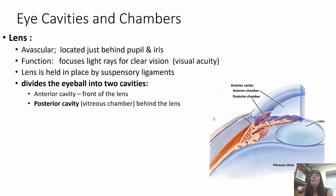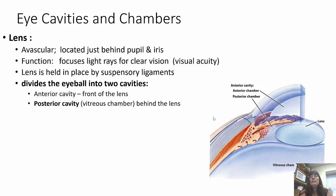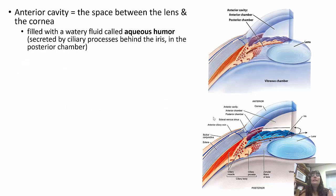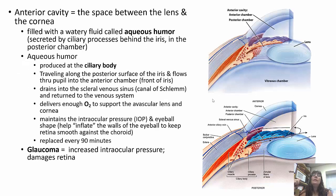The eyeball also has cavities and chambers. The lens is avascular — no blood vessel innervation. It is located just behind the pupil and iris, and focuses light rays for clear vision — this is visual acuity. It's held in place by suspensory ligaments. The lens divides the eyeball into two cavities: the anterior cavity in front of the lens, and the posterior cavity behind the lens, which is also called the vitreous chamber.